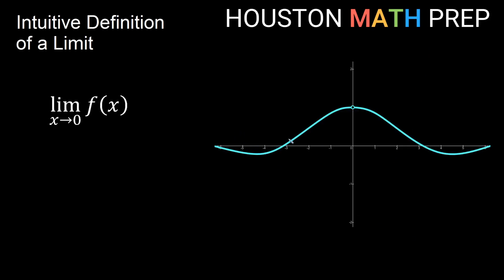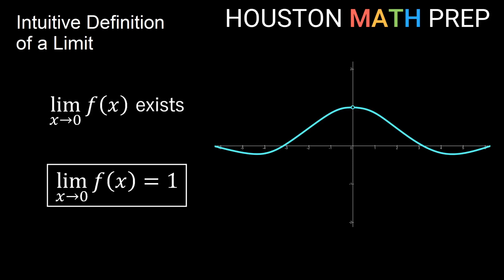Looking at this next one, we have smooth curvy behavior until we get to this point. The question for a limit is: do we get closer and closer to a specific y value as we approach from both sides? The limit does not ask if it's defined at 0 — it asks, do we approach a specific y value as we approach 0? As I approach from the left, I approach the hole, which is at a y value of 1. From the right side, I also approach a y value of 1. So the limit as x approaches 0 of this function exists, and that limit is 1.